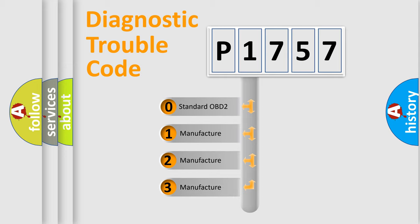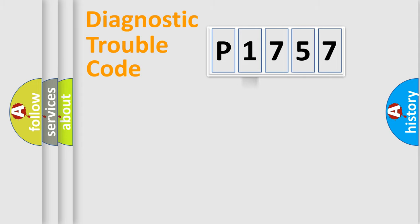If the second character is expressed as zero, it is a standardized error. In the case of numbers 1, 2, or 3, it is a manufacturer-specific expression of the car-specific error.